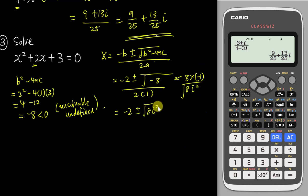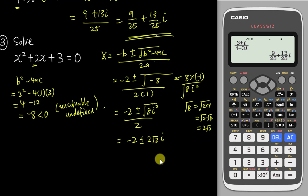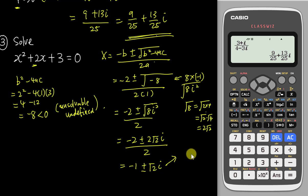So we have square root of 8i squared. Square root of 8: we write 8 as 4 times 2, so the square root of 8 is 2 square root 2. Then square root of i squared gives i. So the numerator becomes negative 2 plus or minus 2 square root 2 times i, divided by 2. We factor out 2 on top and cancel with the 2 in the denominator, giving negative 1 plus or minus square root 2 times i.